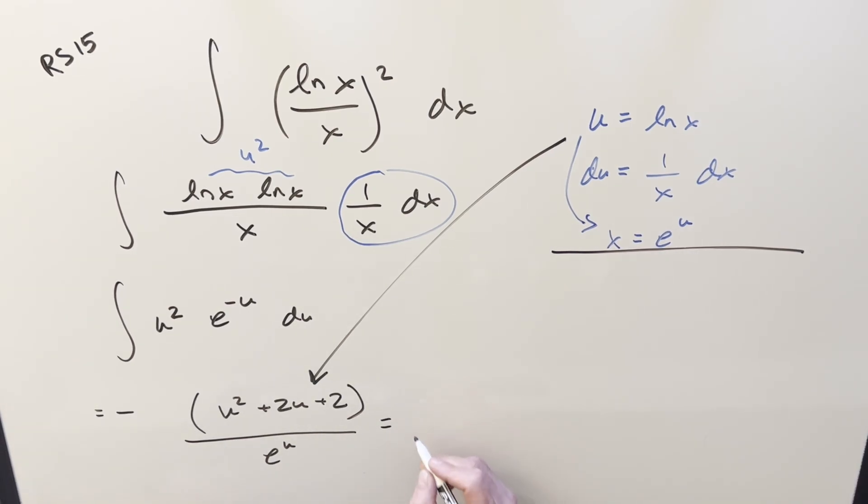So putting this all together for my final solution, we've got a minus sign out front. Then we're going to have natural log of x all squared plus 2 natural log of x plus 2, all over x, plus C. And that's it.